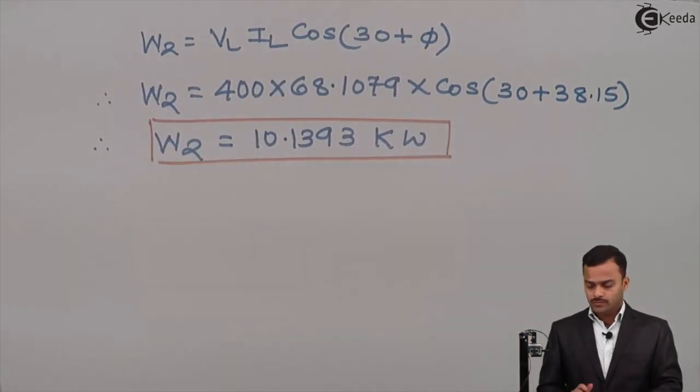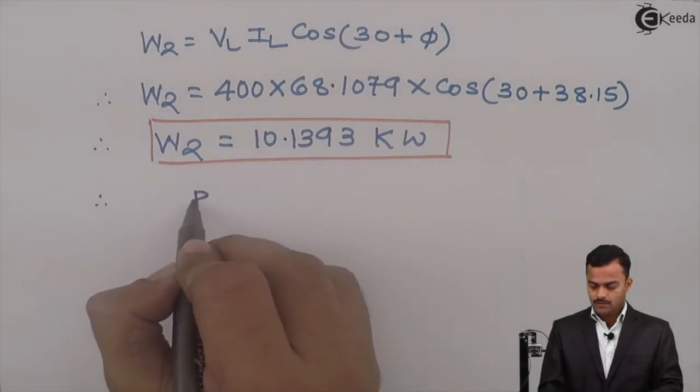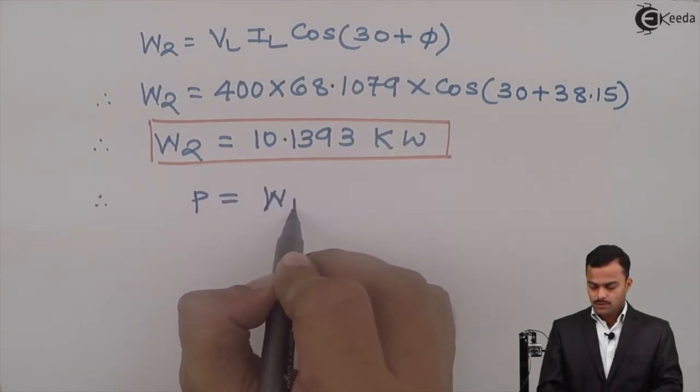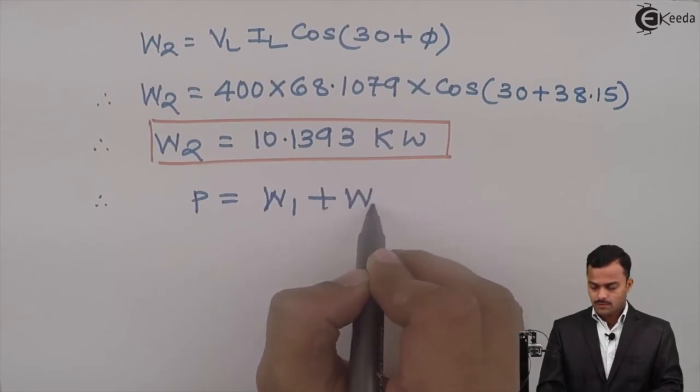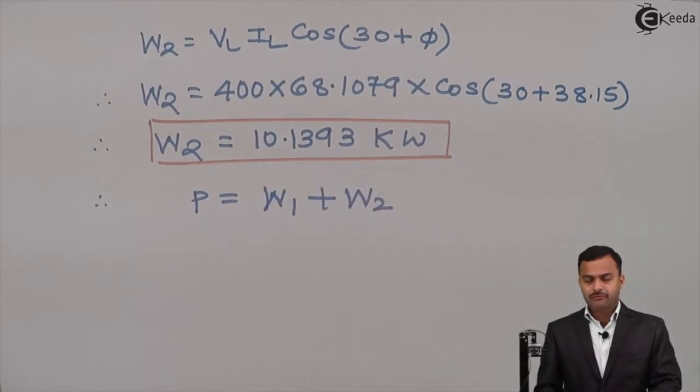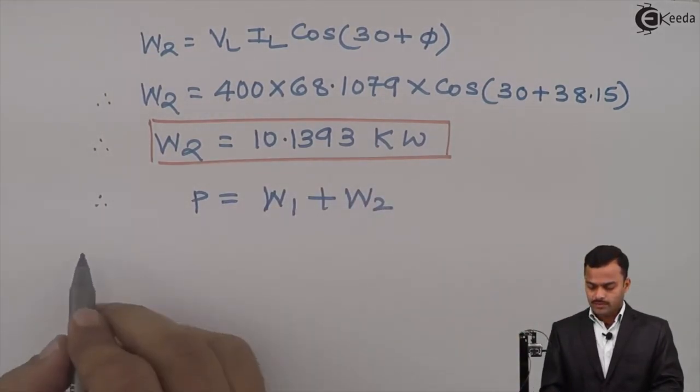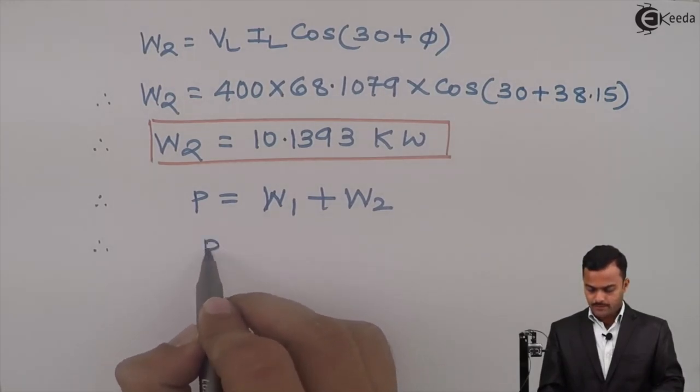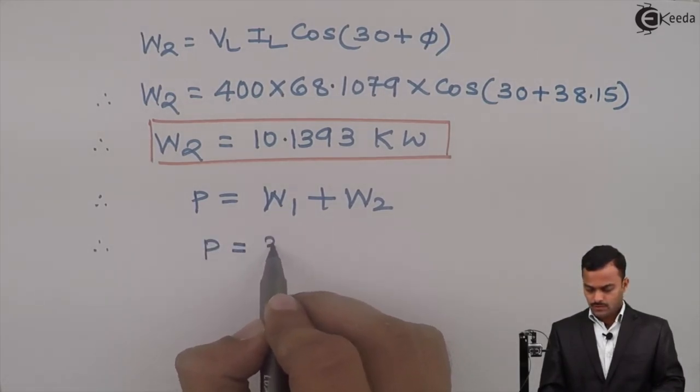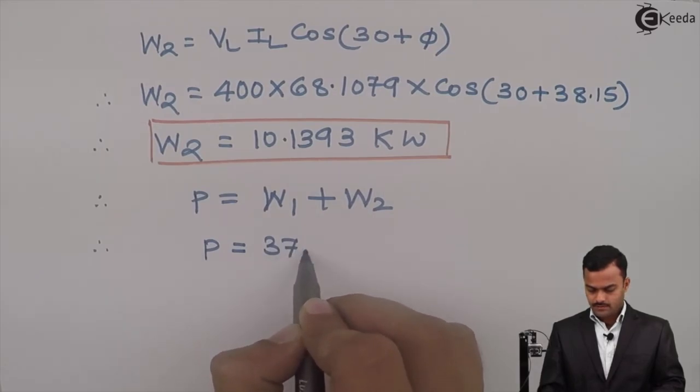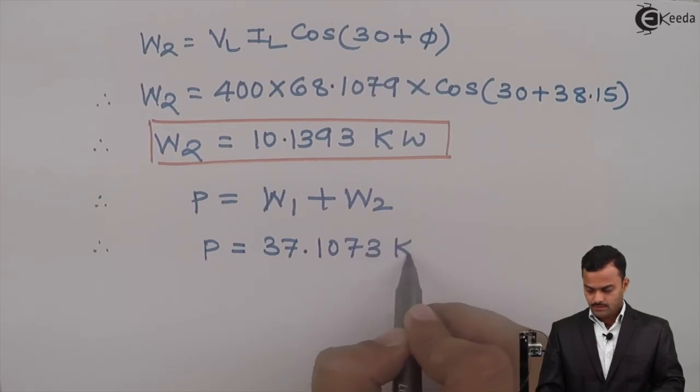If I know W1 and W2, I can say total power equals W1 plus W2. If you add the readings of W1 and W2, you will get total power P equal to 37.1073 kilowatts.